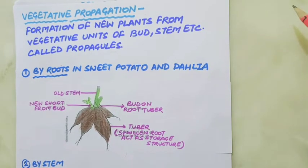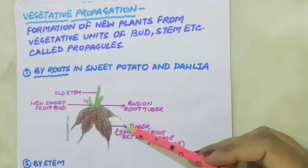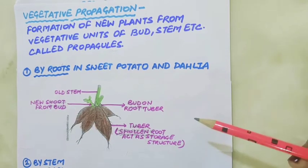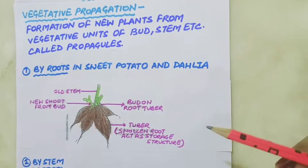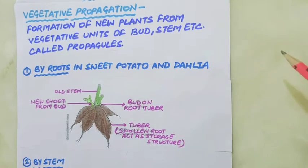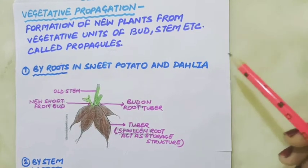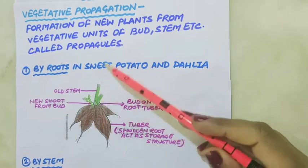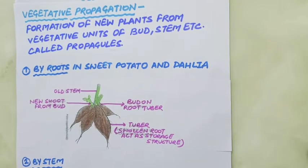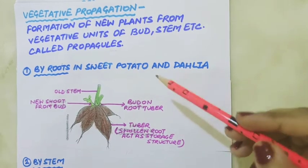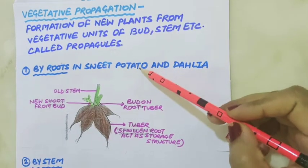Plants that have tuberous roots — roots which are used as storage organs — participate in vegetative propagation. In order to grow new plants, these tuberous roots are sown in the soil. Buds present on the root tuber grow above the ground and a new plant is formed. Some examples of this type of propagation are seen in sweet potato.